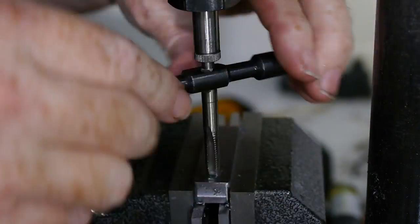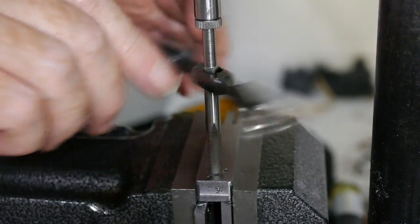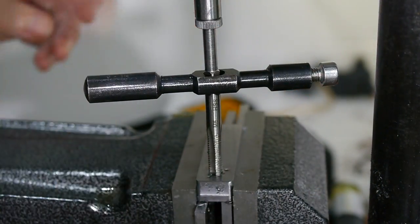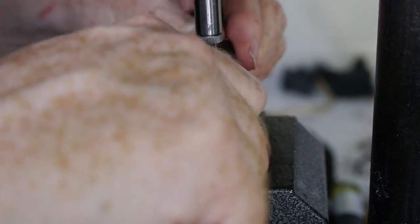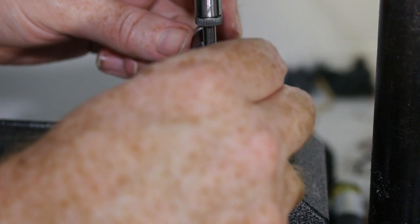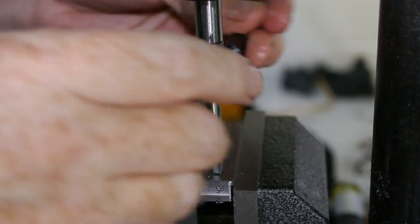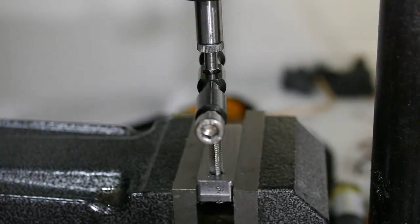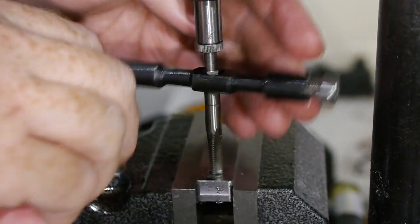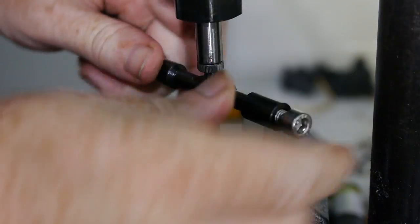After a few turns the tap got so tight that I was afraid it would break, so I switched to a bottoming tap to widen out the threads I'd already established. Then I changed back to the starter tap, taking care not to cross the threads. I changed back and forth between the two taps a couple of times, before eventually the thread was complete.